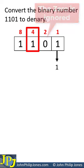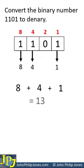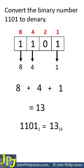Here we've got 1 lot of 4, so we write the 4 down. And here we've got 1 lot of 8, so we write the 8 down. We now take these numbers and add them together to give us the result of 13. We can now show that the binary number is equal to the denary number 13.